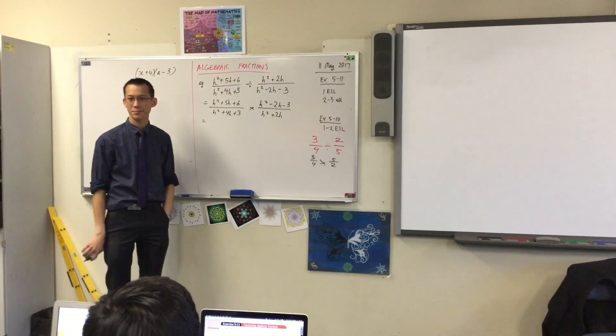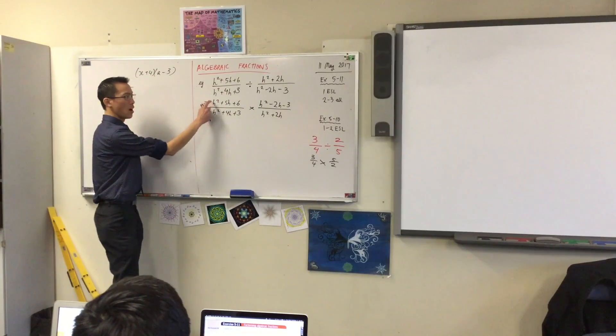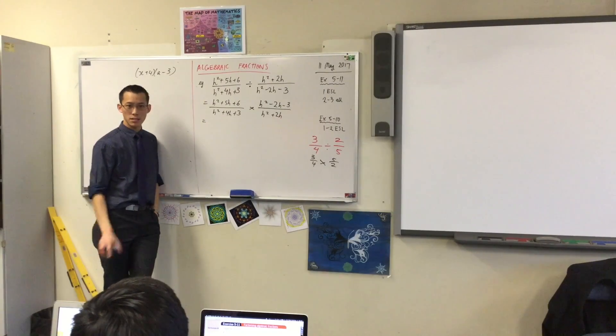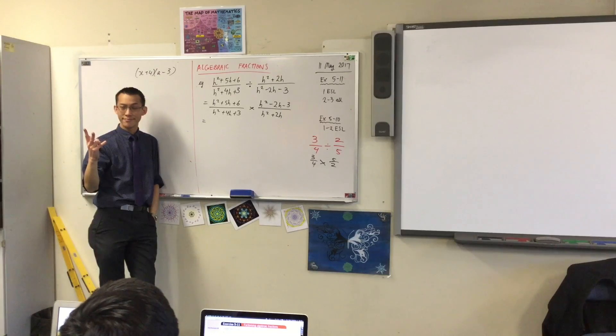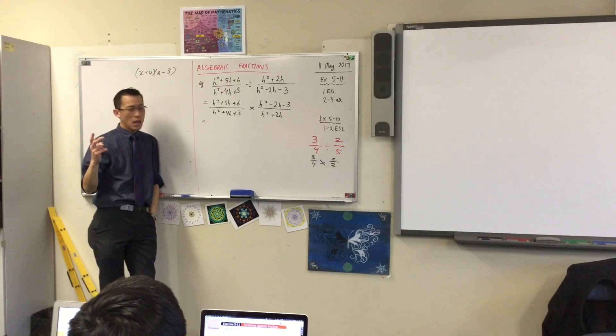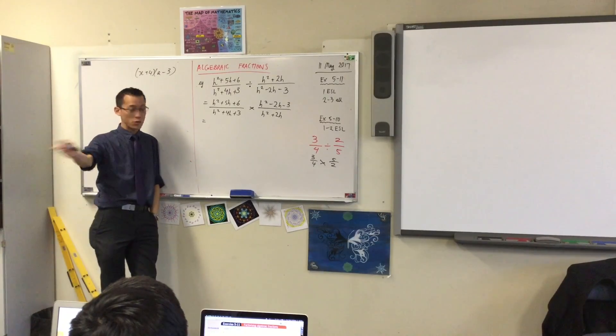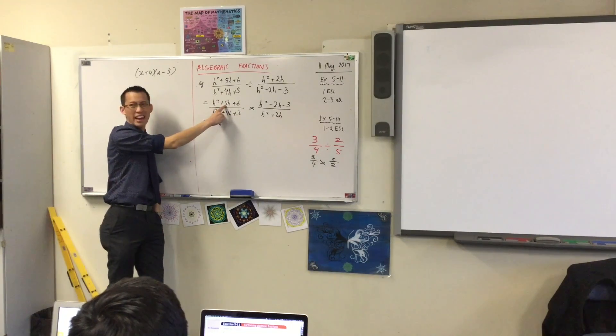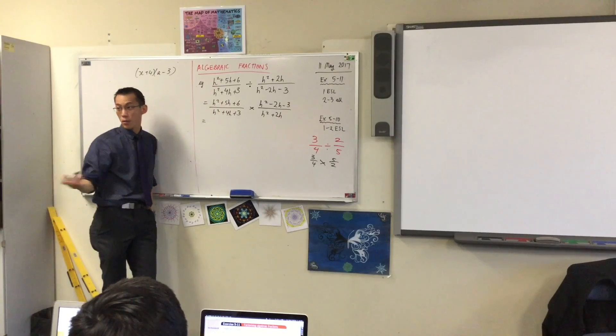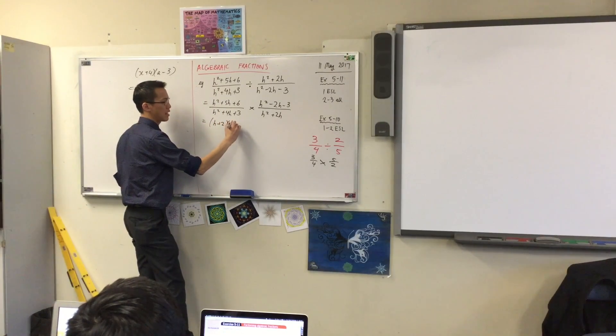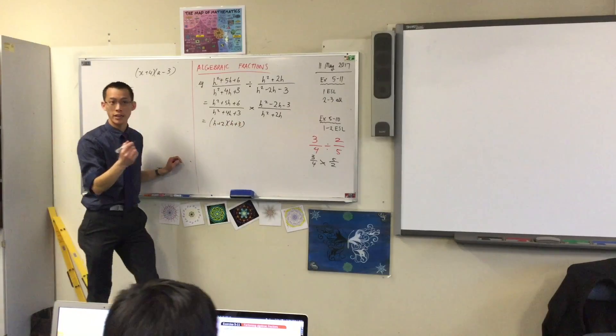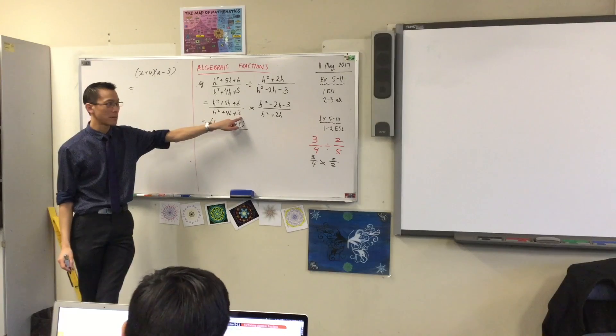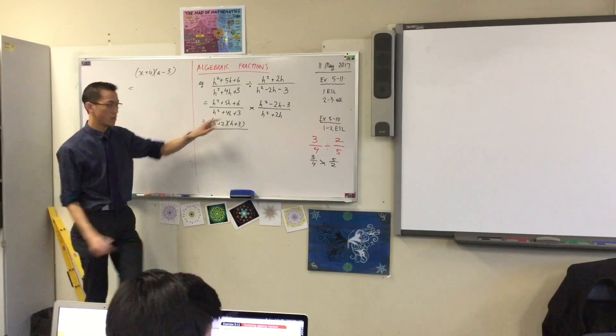Instead, have a look at the first example we did today. What strategy can help me before I start combining? I'm going to factorize. Let's have a go. Up the top here: h squared plus 5h plus 6. What pair of numbers can we think of? Six plus one would give me five if one were negative, but it's all positive, so instead I'll go with two and three. So I've got h plus 2, h plus 3. Denominator: pair of numbers adds to 4, multiplies to 3—that's 3 and 1.